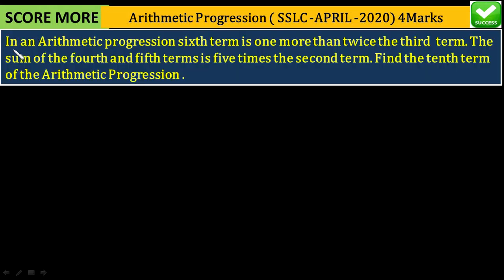The question is: In an arithmetic progression, the sixth term is one more than twice the third term. The sum of the fourth and fifth terms is five times the second term. Find the tenth term of the arithmetic progression.